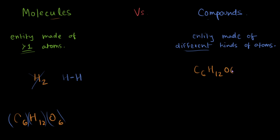Another example: water. Water is a compound because it has different kinds of atoms. It is also a molecule because it has more than one atom — two hydrogens and one oxygen. Do you see the pattern? All compounds are molecules, but not all molecules are compounds. H2 is a molecule but not a compound, because it doesn't have different kinds of atoms.